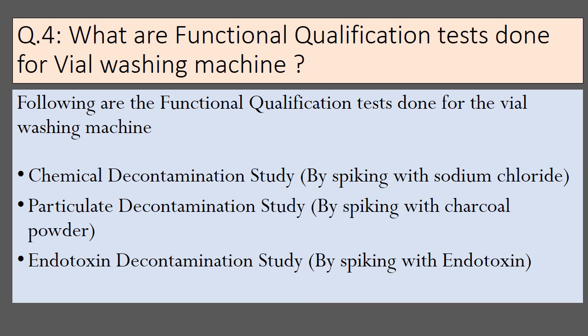The next question is: what are the functional qualification tests done for a vial washing machine? The following are the functional qualification tests: first, chemical decontamination study by spiking with sodium chloride; second, particulate decontamination study by spiking with charcoal powder; and third, endotoxin decontamination study by spiking with endotoxins.